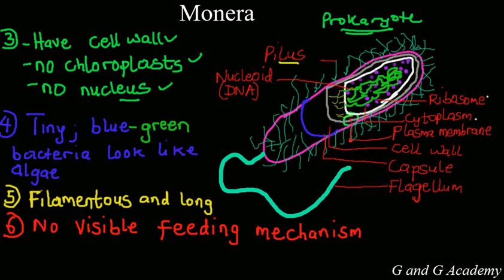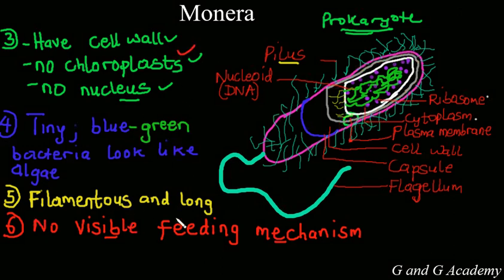Another thing we discover about Moneras is that they have no visible feeding mechanism. They normally feed by absorbing nutrients through their cell wall, or sometimes through photosynthesis, because they are green and they have some chloroplast material. So they can photosynthesize and produce their food themselves.